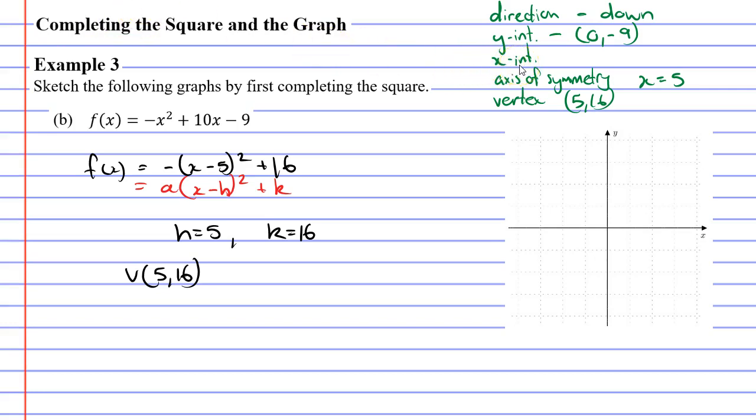Now for the challenging part, finding our x-intercepts. We're going to take this function here and we're going to make it equal 0. So we've got -(x - 5)² + 16 equals 0. Let's subtract 16 on both sides. This will give us -(x - 5)² equals -16.